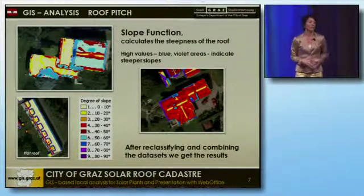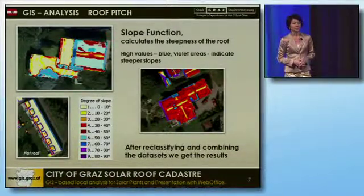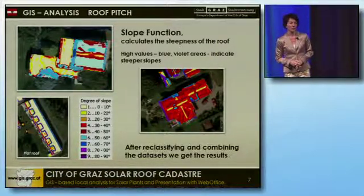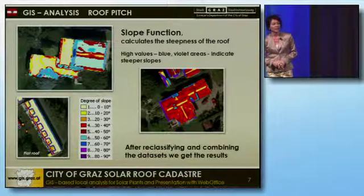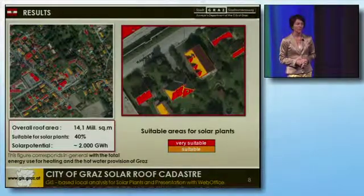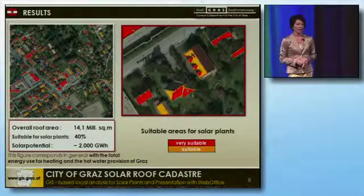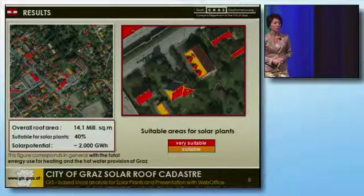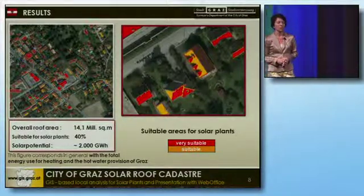After reclassifying the data set and combining the results, you can see the areas of the roof which are suitable for thermal solar power installation. Red is classified as very suitable, and orange is classified as suitable. About 40% of the overall roof area of Graz is suitable for solar plants.